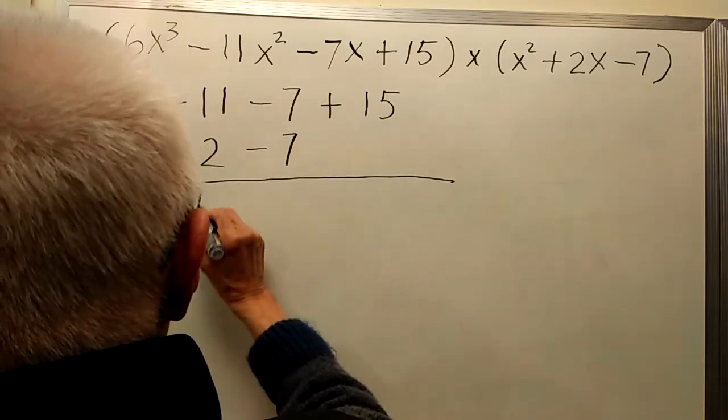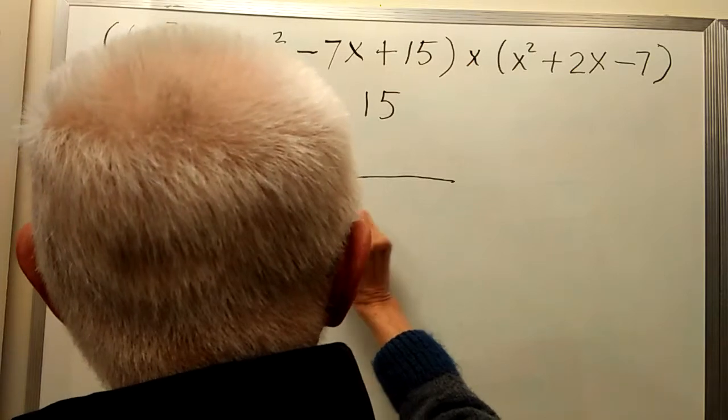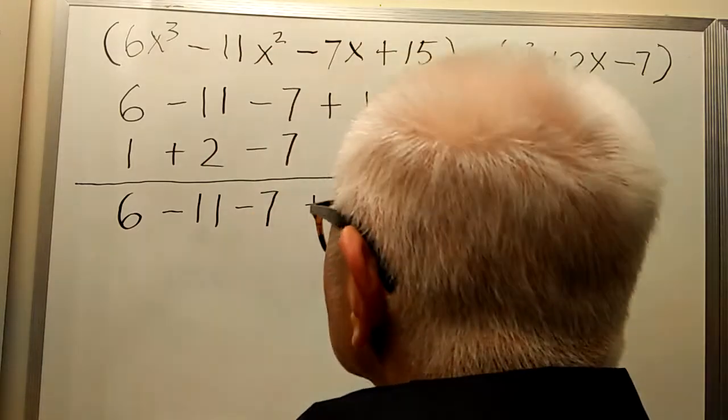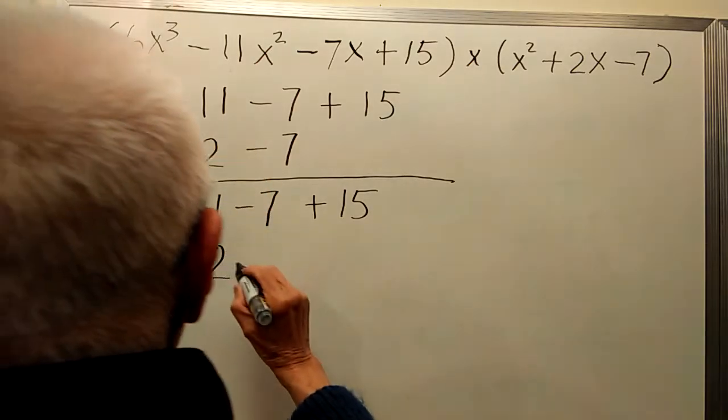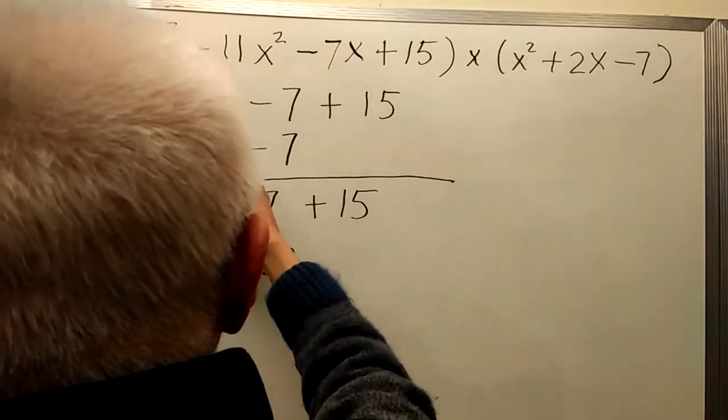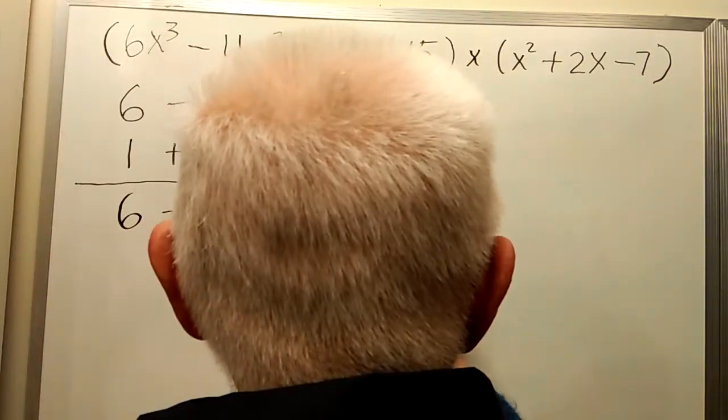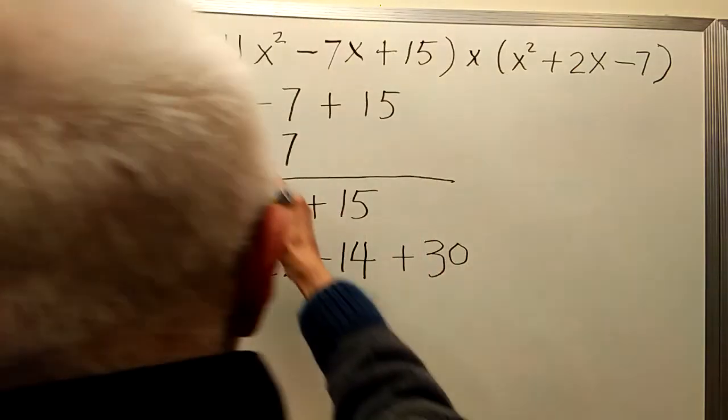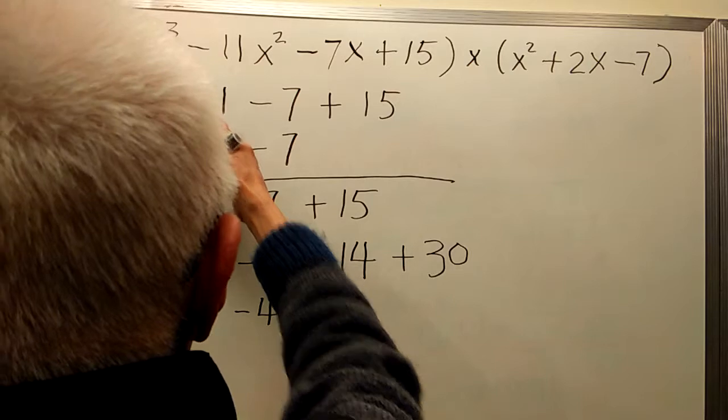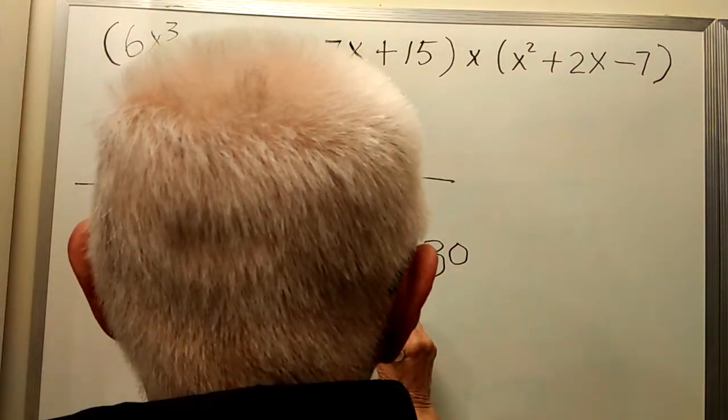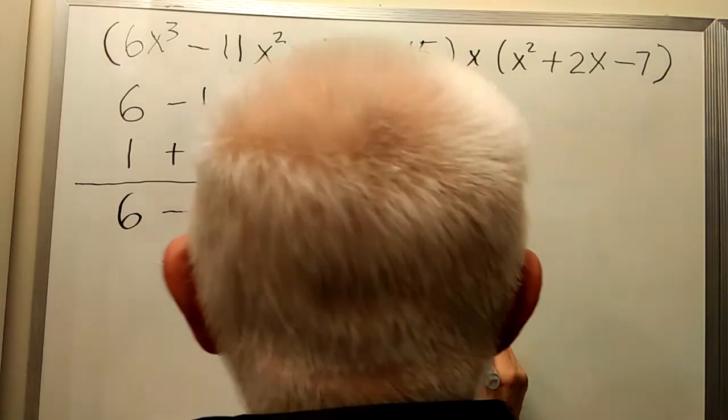1 times negative 11, 1 times negative 7, 1 times plus 15. 2 times 6, 2 times negative 11, 2 times negative 7, 2 times 15. Negative 7 times 6, this times that, this times that, and this times that.